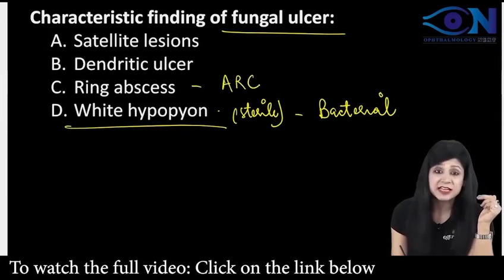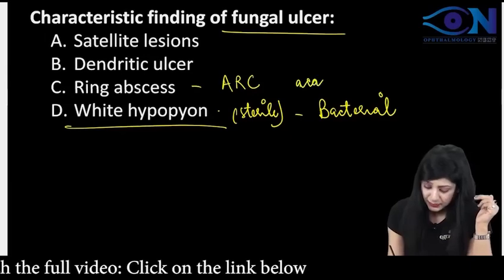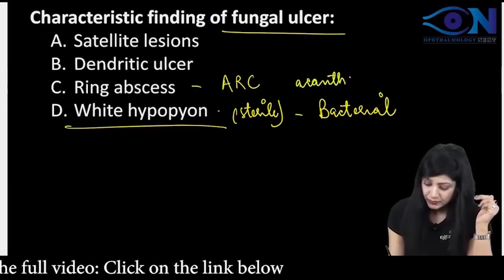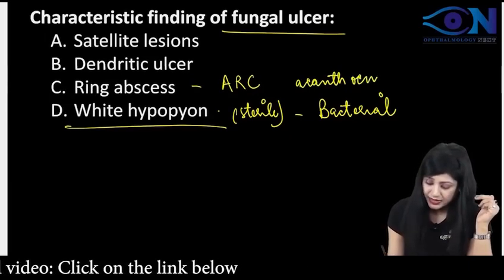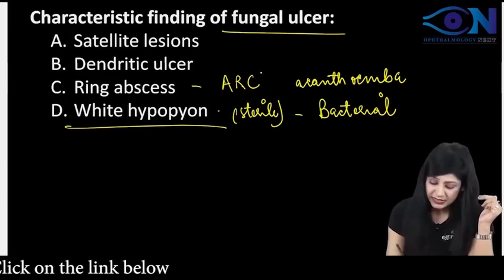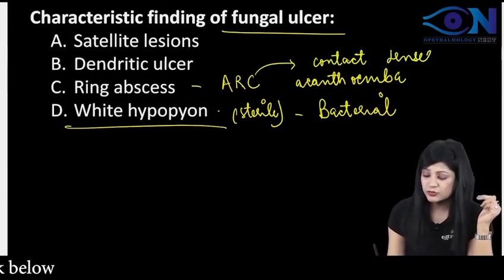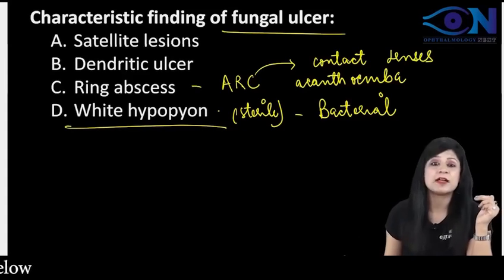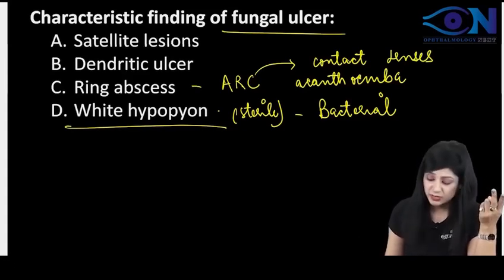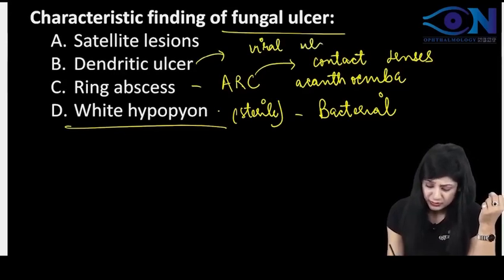Always remember ARC: A for acanthamoeba, R for ring abscess, and C for contact lenses. So it is acanthamoeba which is associated with the ring abscess and the contact lenses. D for dendritic ulcer — this is related with the viral ulcer.